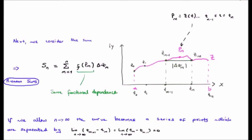The next thing we do is we consider the sum S sub n, which is the sum of the product of f of P sub m, which is the value of the function f of z at the point P sub m.